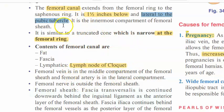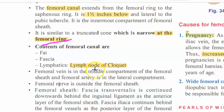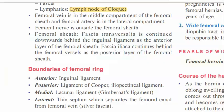The hernia forms lateral to the pubic tubercle. It is narrow at the femoral ring. Just as the inguinal hernia has a deep ring and superficial ring, here there is a femoral ring, and the hernia tries to come out through this existing opening.